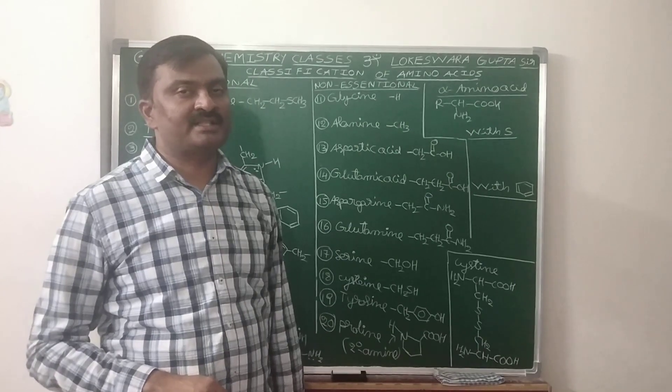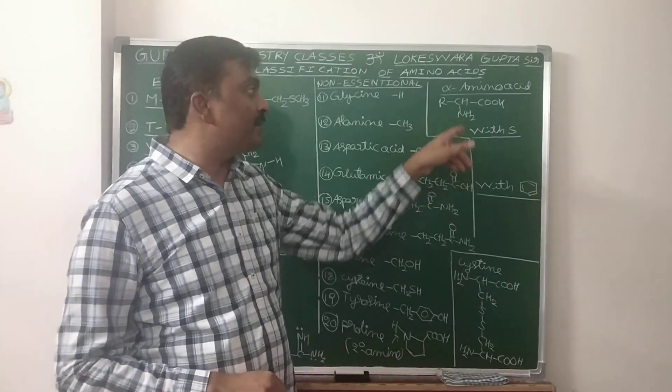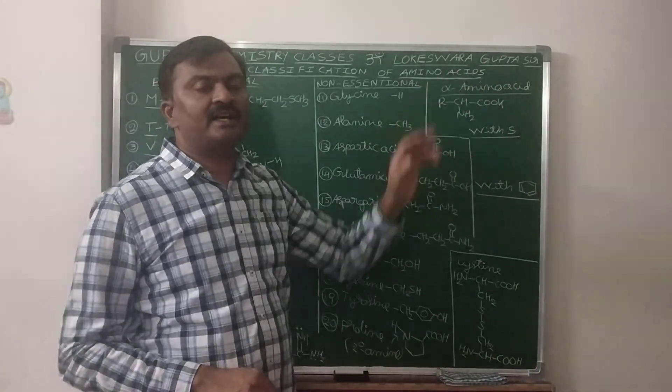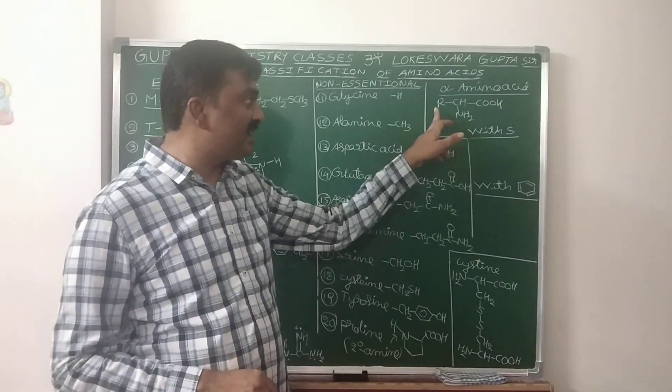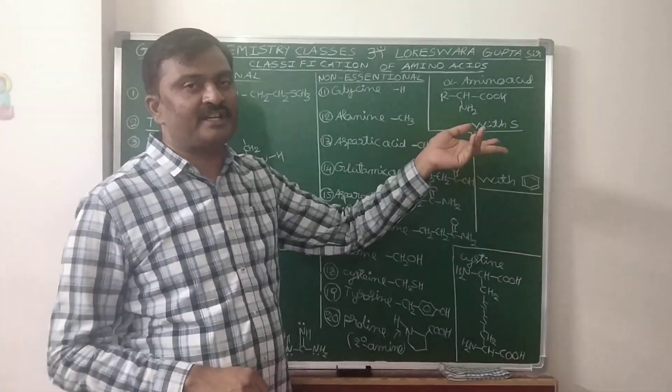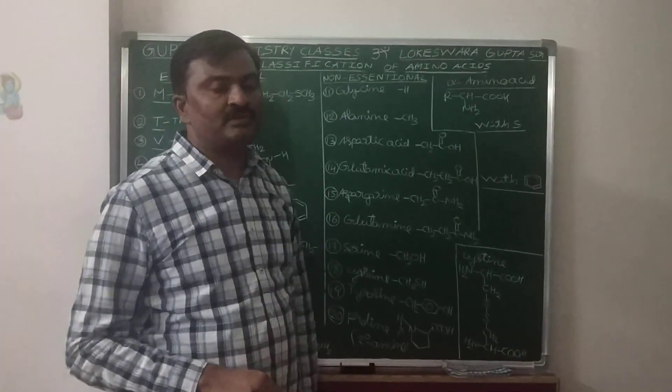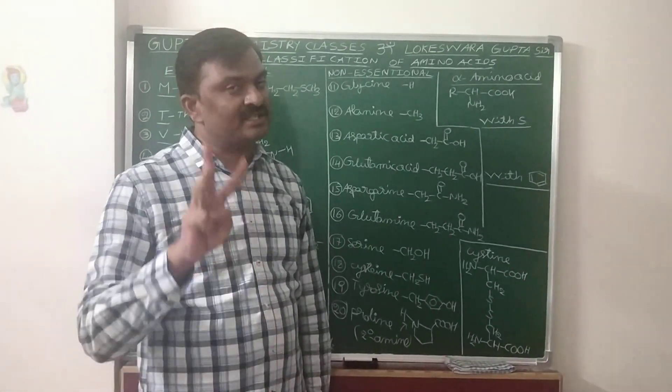Basic alpha amino acids possess more number of basic groups than the acidic groups. So in this alkyl side chain, one more basic group to be present. Now what are those basic amino acids? Three are there.